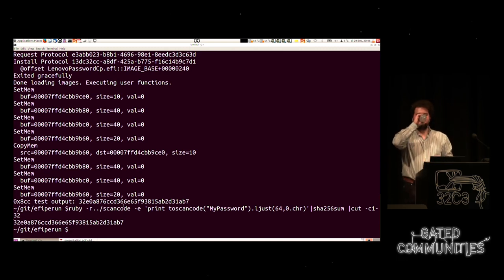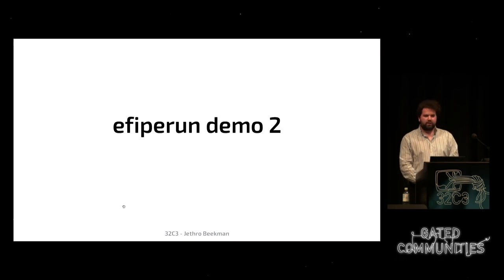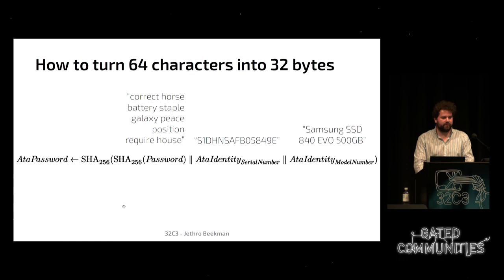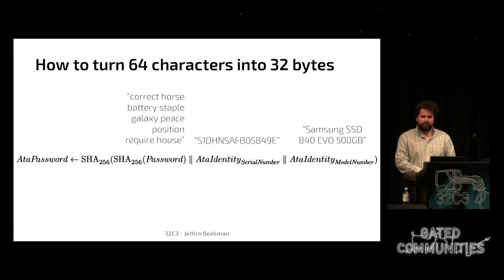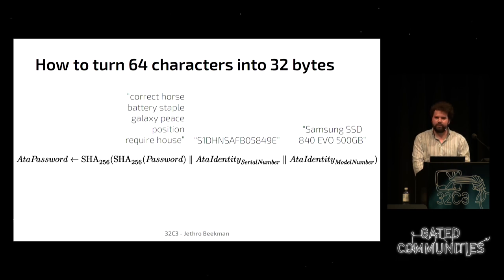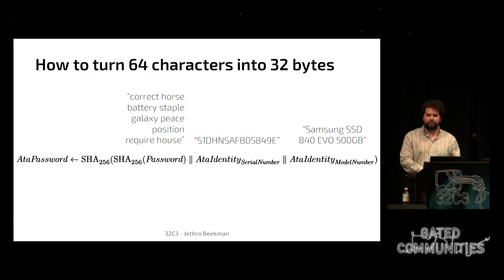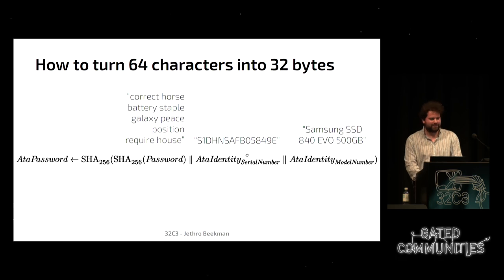We have reverse engineered the first half of the password algorithm. It took about three weeks to decode the entire algorithm. The password hash is then concatenated with the serial number and model number of the hard drive, and that combined value is hashed again, and then passed to the SATA drive over the ATA protocol. This is actually quite a good idea, because if you sniff the password over the SATA bus, you will only be able to unlock the same drive — other drives with the same password will have a different serial number and model number, so the hash won't work for them.